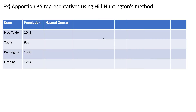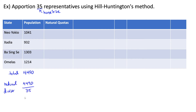Now let's look at another example: apportion 35 representatives using Hill-Huntington's method. So 35 is our house size. We add up all of our state populations and end up with a total population of 4,490. We divide our total population by our house size and get a natural divisor of 128.2857. We then divide each state population by this number to get our natural quotas.